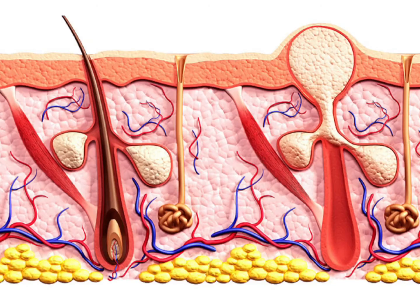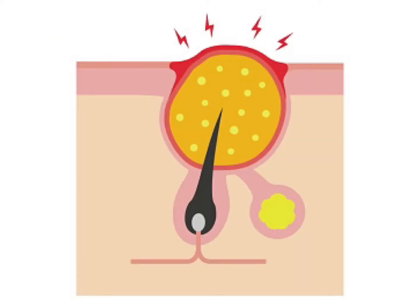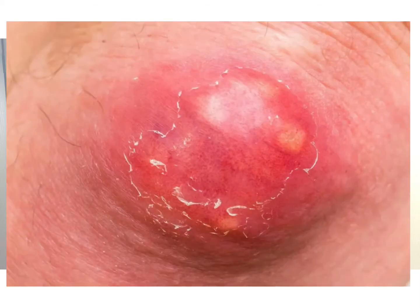A boil is an infection of the hair follicle caused by Staph aureus. We carry this Staph aureus usually in our armpits, our nostrils, in the crease of the buttocks, between the legs, and also in our nail beds.